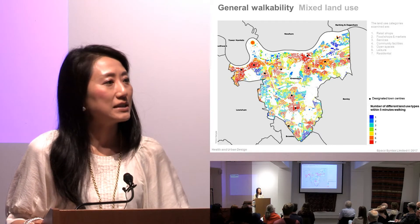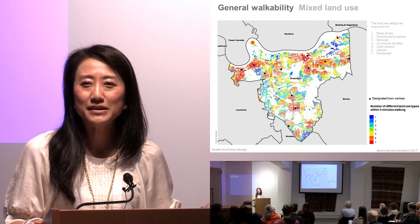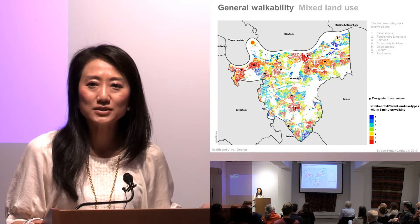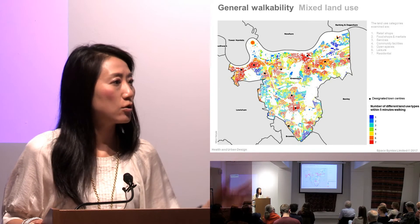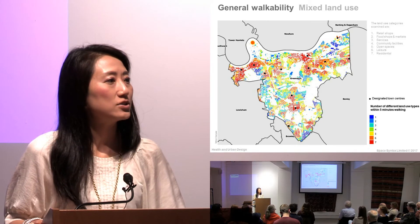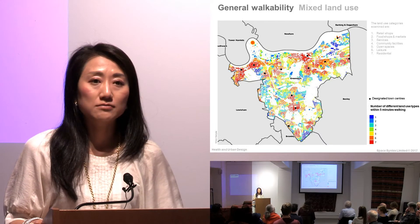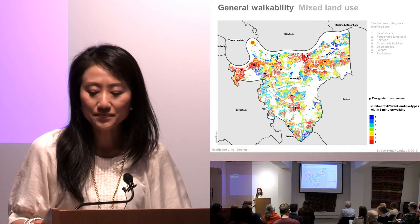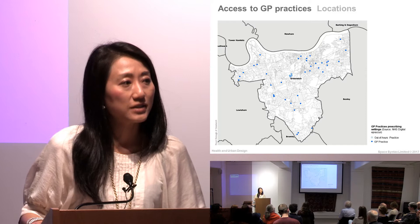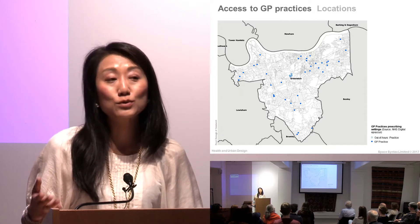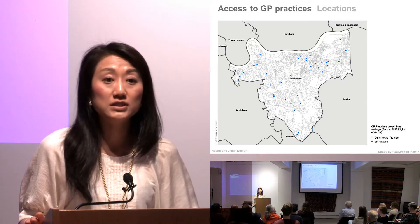You can see that if you live in an area with a warmer colour, within five minutes walking distance you can do a lot of different things. Whereas if you live in an area with cold colours, you have to walk farther or take different modes of transport. When it comes to access to services, there is also a more direct impact on health — for example, access to GP surgeries.